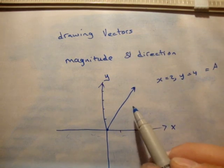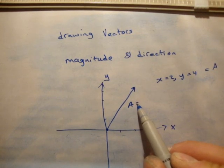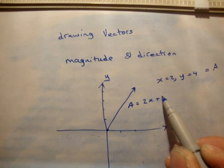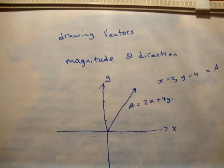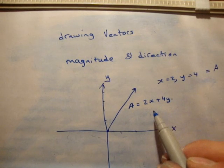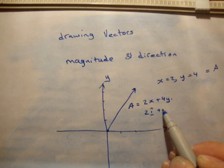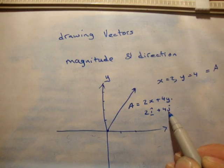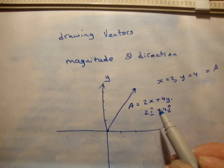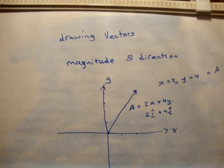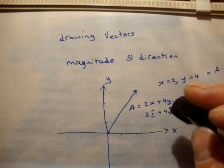So this is the vector. So A is the vector 2x plus 4y. Now you'll find in a moment when I talk about unit vectors that this actually will be written 2 units in the i hat plus 4 units in the j hat. Now don't worry about that. You can just think x and y. i and j, x and y, they're the same thing.